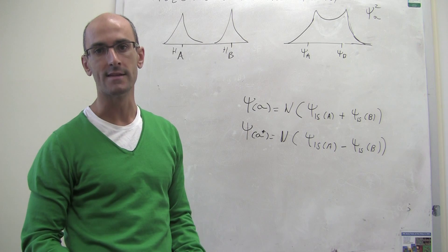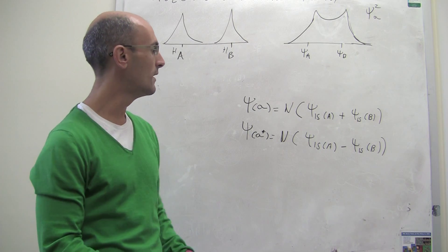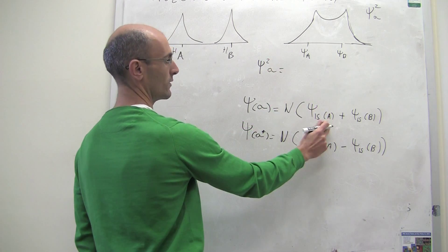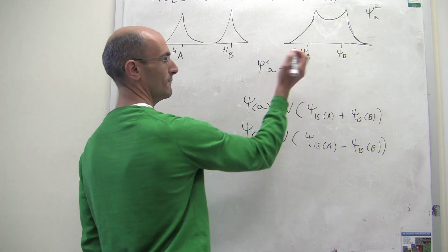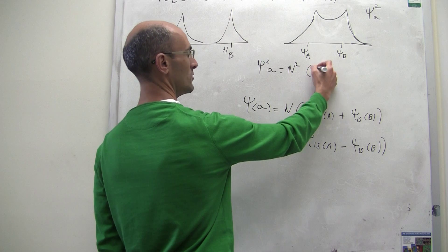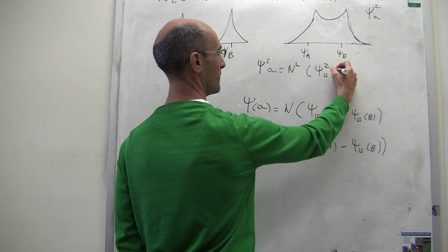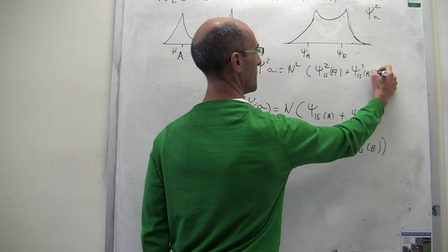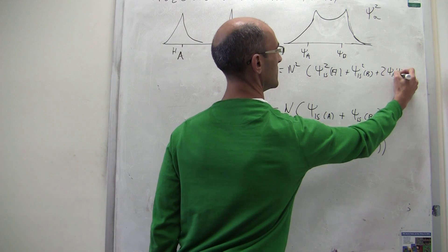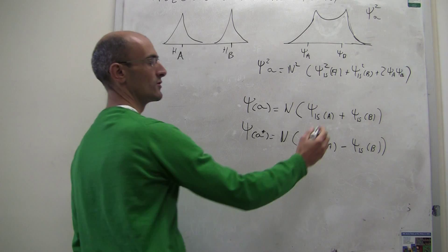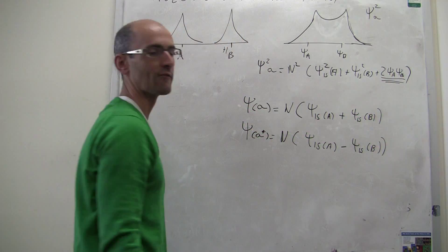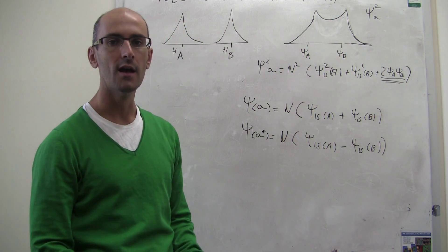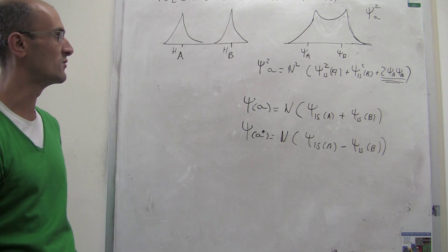We can write the probability distribution mathematically by squaring the sum. You get ψA squared plus ψB squared, plus a cross term of 2ψAψB. That cross term — 2ψAψB — is the term that gives rise to bonding. It is the term that places electronic density in between the nuclei, and that's what gives rise to bonding.